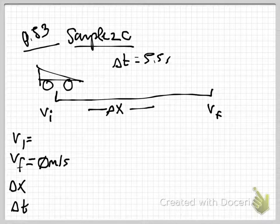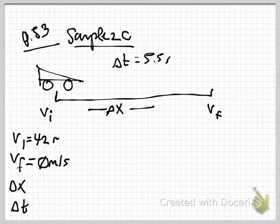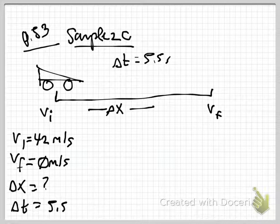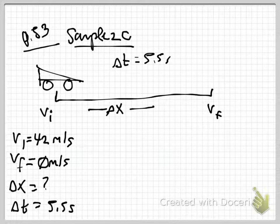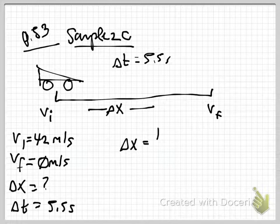What we want to know, so this displacement, this delta x, is what we're looking for, and we have a time interval in which this occurs. 5.5 seconds. So, the next thing, now, right now, you only really have one equation. The first thing to do is list your variables. So, I'm going to list my vi, my vf, my delta x, my delta t. What's my vi?